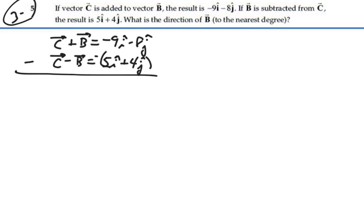We'll have C minus C, which is zero. We'll have B minus negative B, which is 2B. That'll be equal to (-9 - 5)i + (-8 - 4)j.